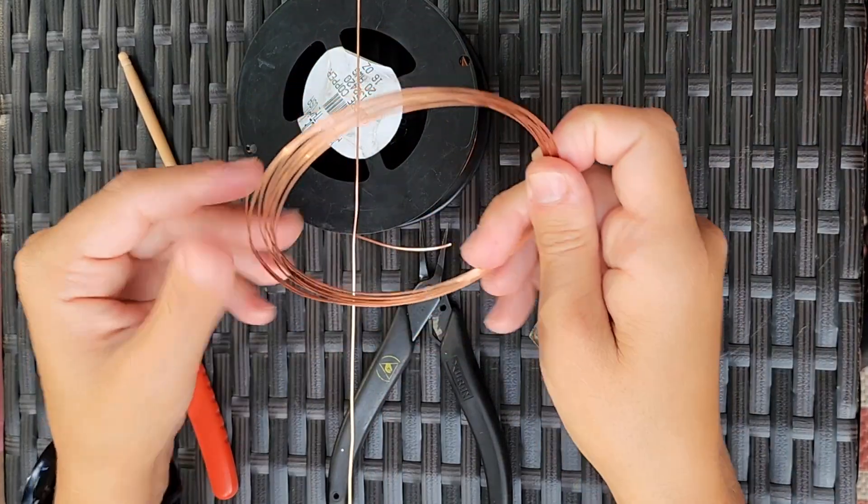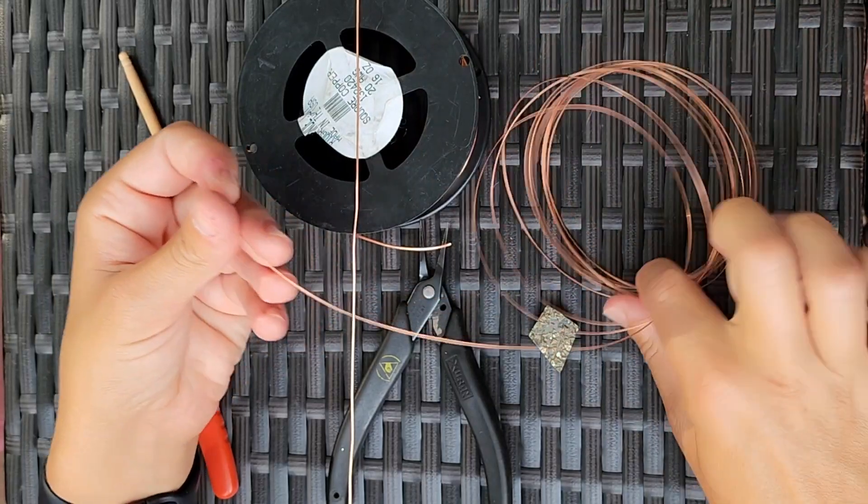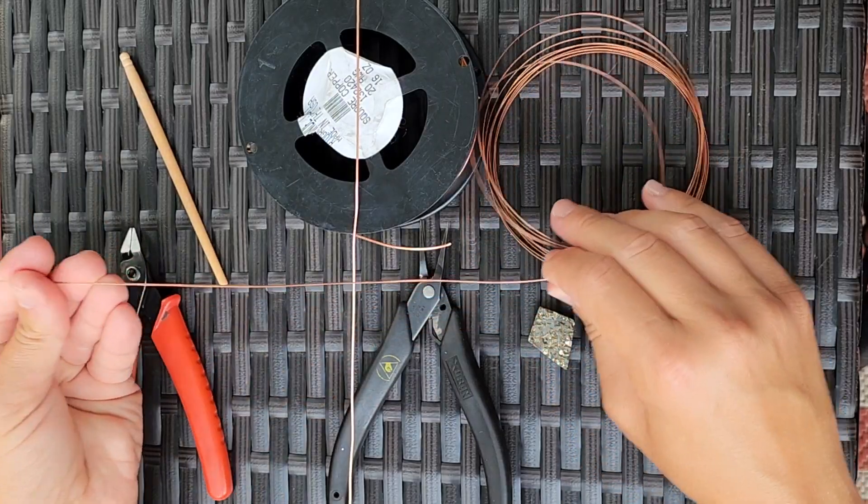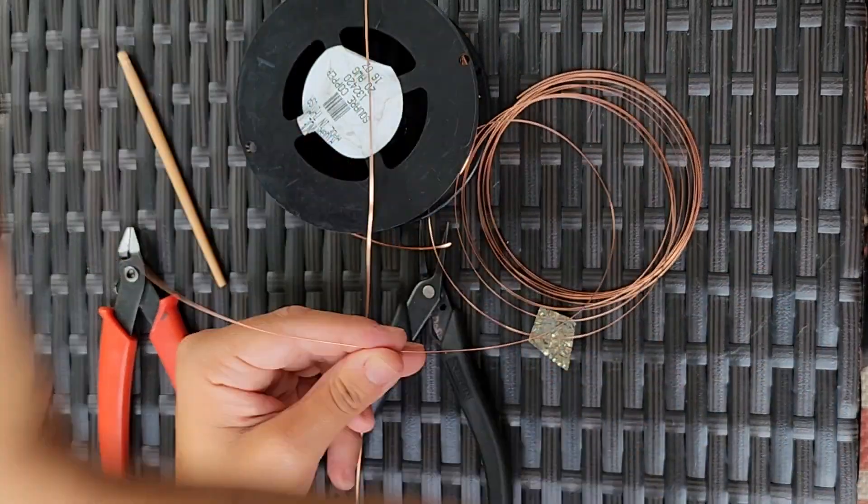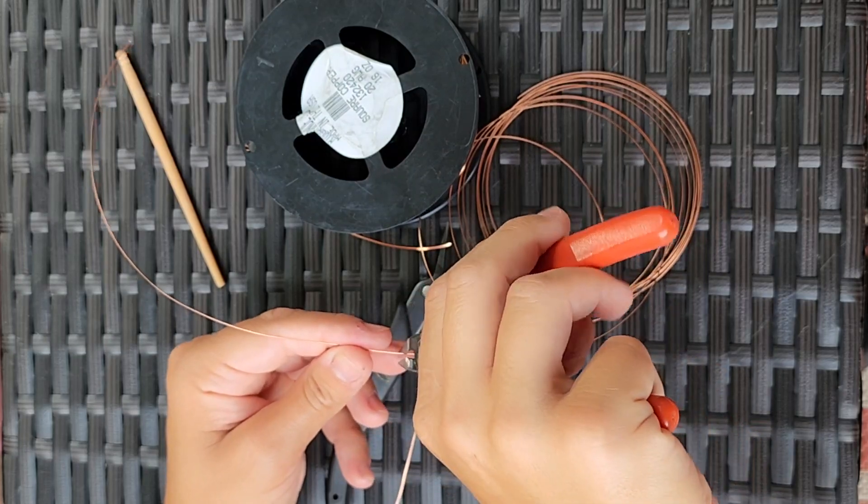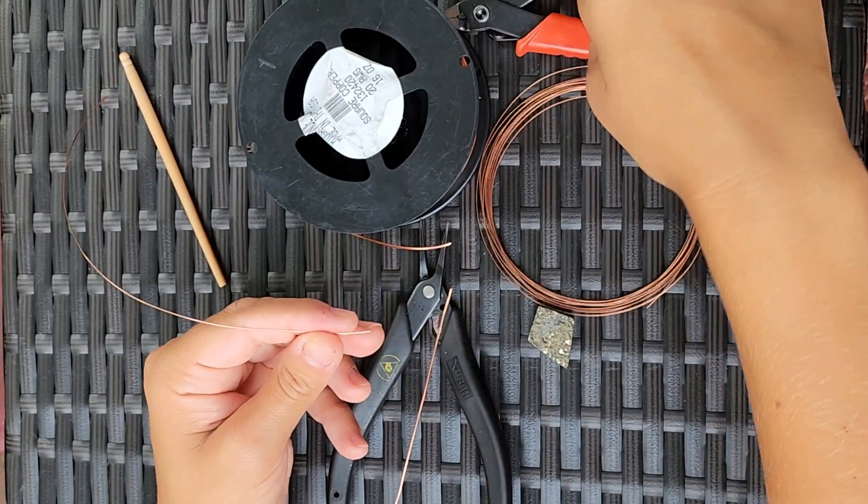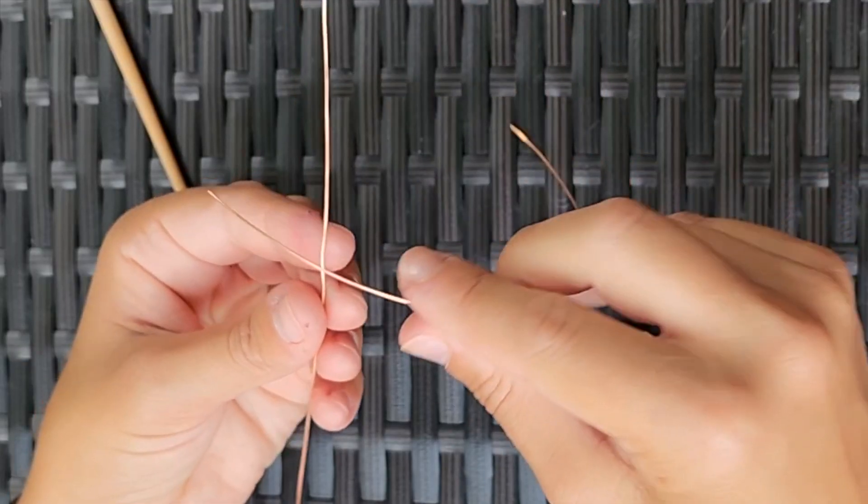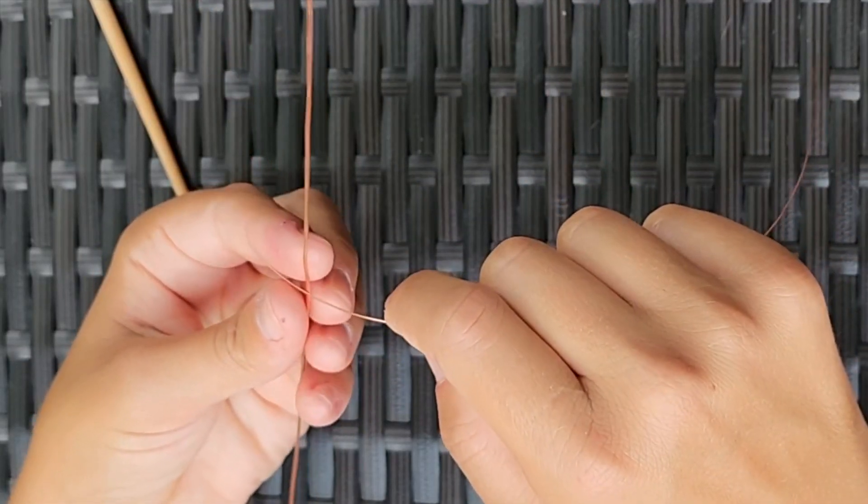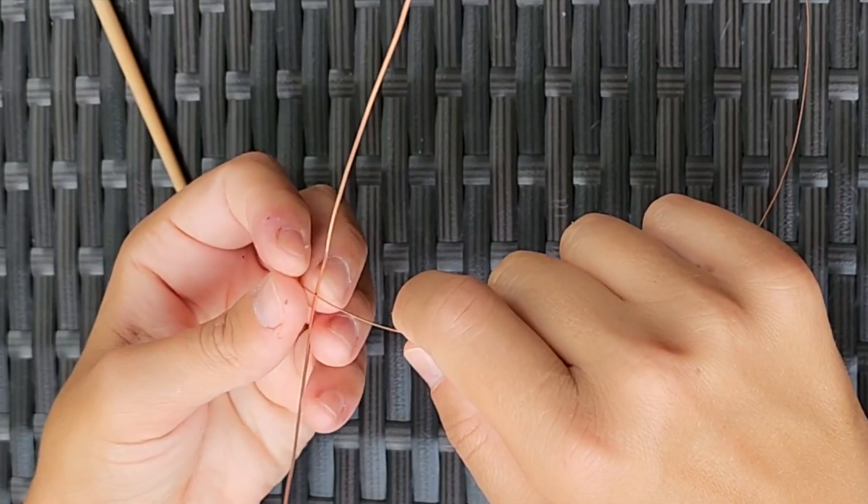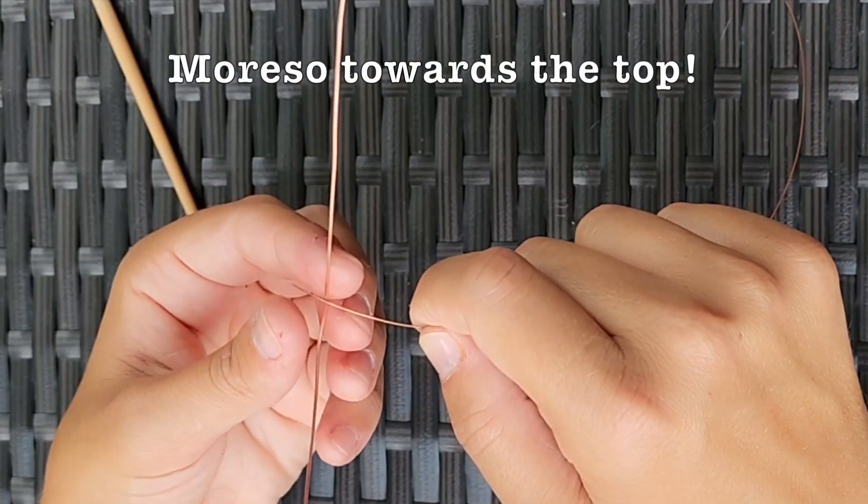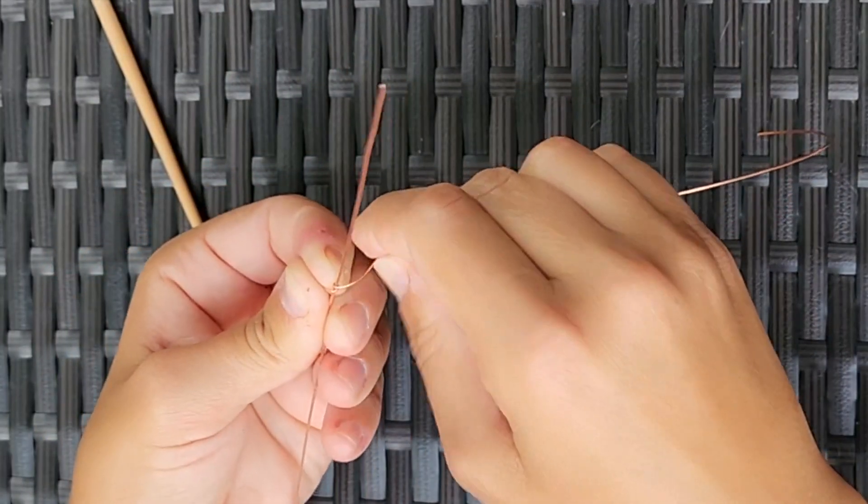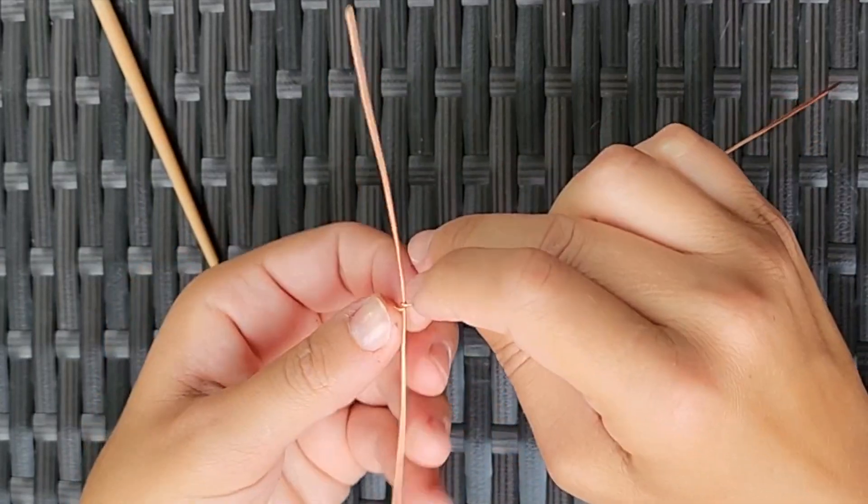Since we are doing a wrapped bail technique, next we will cut six to seven inches of our half round wire. We're using these two wires to make our wrapped bail. We're going to start slightly off center.